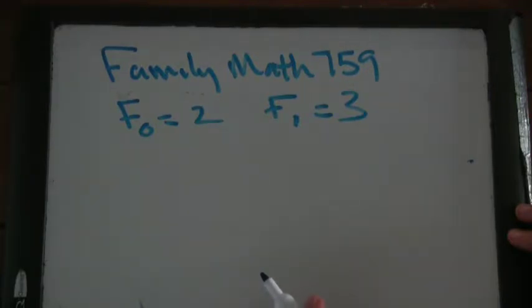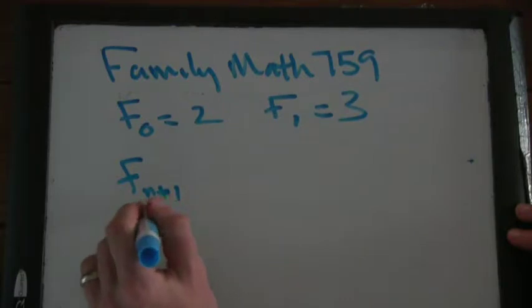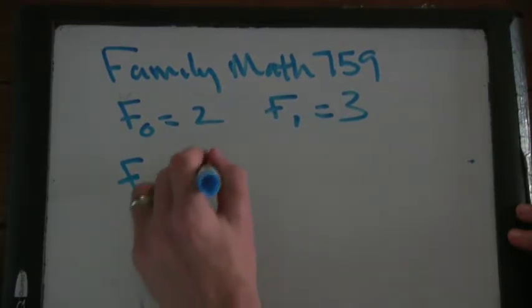Okay, so how are we going to write that? So F of n plus 1. Fn plus 1, not F of n plus 1, but Fn plus 1 is our numbering. Equals?